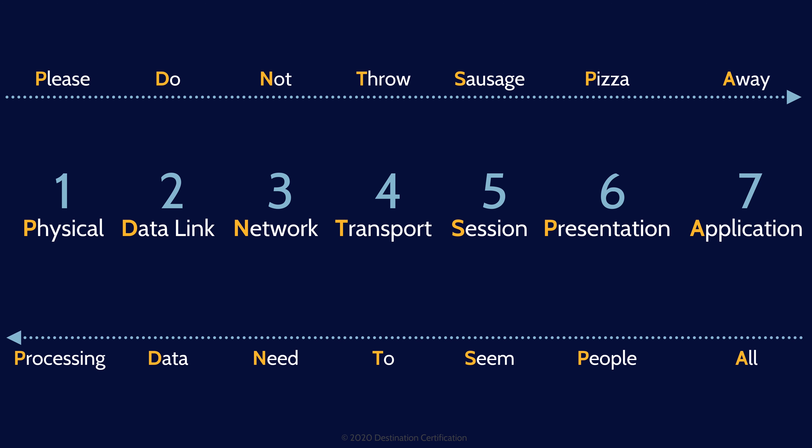Here are a couple of mnemonics to help you memorize them. Starting at the bottom, we have the classic: 'Please Do Not Throw Sausage Pizza Away.' Or starting from the top: 'All People Seem To Need Data Processing.' Now, let's go through each layer starting at the bottom with layer 1, briefly explaining what happens at each layer, along with the major protocols, devices, and other interesting tidbits.